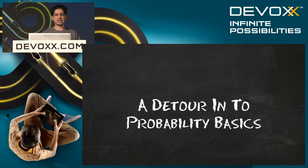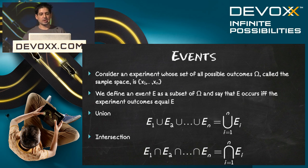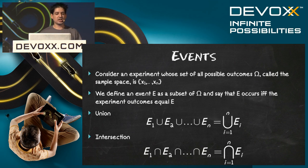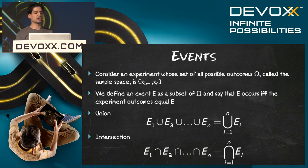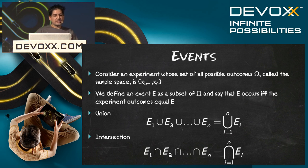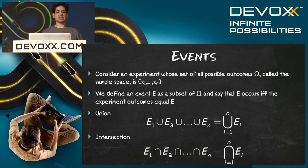Now we have to take a bit of a detour. We're going to start off with describing what an event is. An event is some experiment that has an outcome, and one of those outcomes is the event. We call all the possible outcomes omega — that's just to represent all possible outcomes. If one of these outcomes happens and it matches an event, well, the event happened. It's that simple.